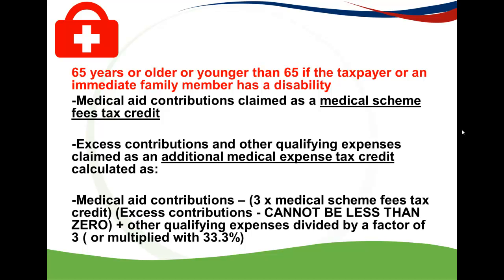You take your medical aid contributions — both the employer and the employee — and from that you deduct 3 times the medical schemes fees tax credit which was calculated in Part A. That equals the excess. Remember your excess can never be less than zero; it will always be a positive figure. To that you add your other qualifying expenses, and then you multiply the total with 33.3% or divide it by a factor of 3.